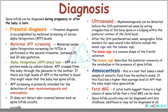Another diagnostic tool is ultrasound scan. Myelomeningocele can be detected before the 12th postmenstrual week by noting irregularities in the bony spine or a bulging within the posterior contour of the fetal back. After the 12th postmenstrual week, sonographic fetal markers for open neural tube defects include the lemon sign — a concave shape of the frontal calvarium — and the banana sign — a posterior convexity of the cerebellum. Amniocentesis, which involves taking a small sample of amniotic fluid from the mother's womb, can also be performed; if the fluid has higher than average levels of alpha-fetoprotein, the baby might have Spina Bifida.